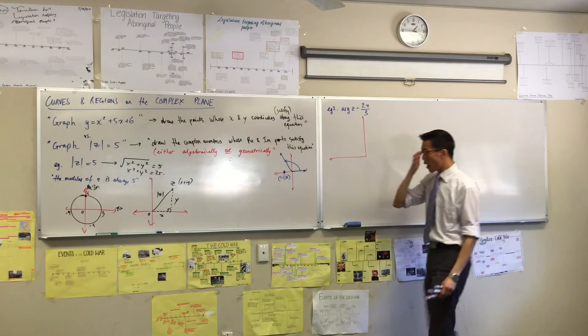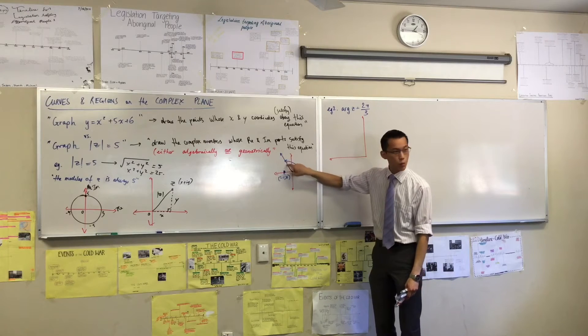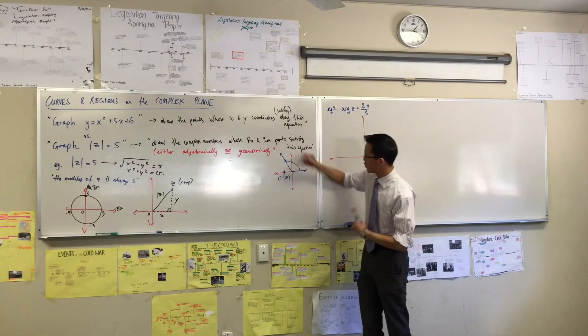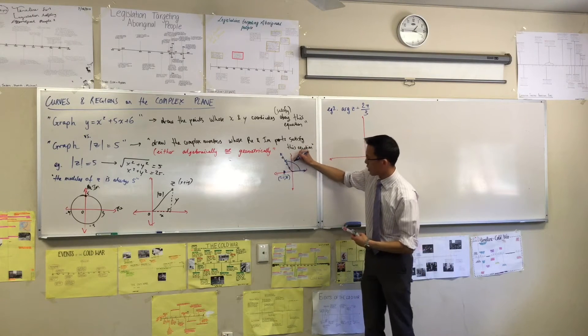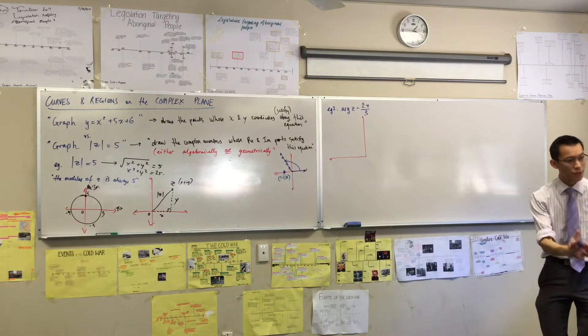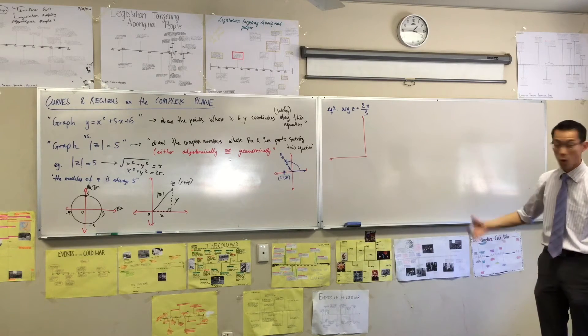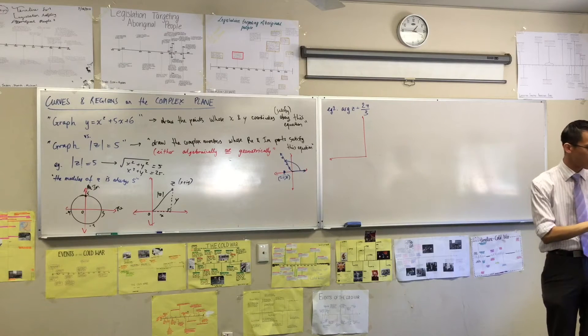You can see that if I were to put you on any one of these spots, right? Like put you here, or here, or here, or anywhere else on there. The arguments of all those complex numbers will all be 2π/3. Do you agree with that?